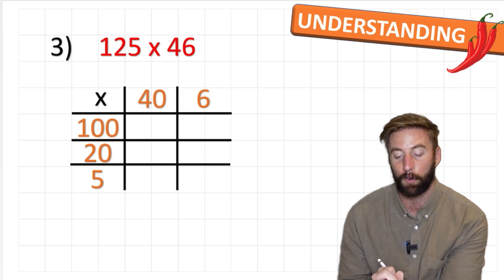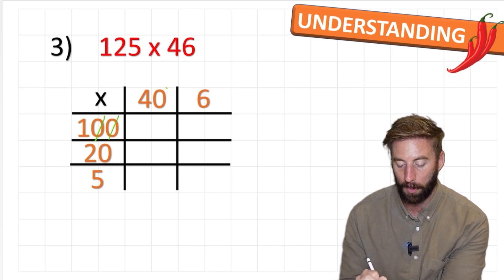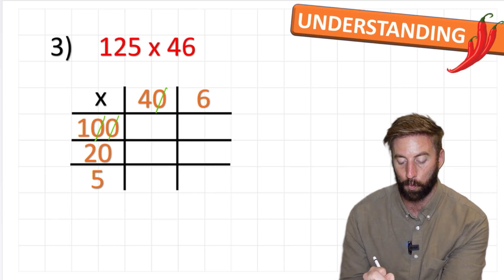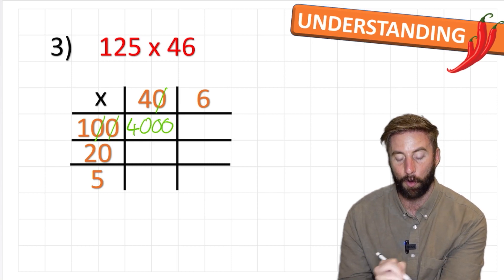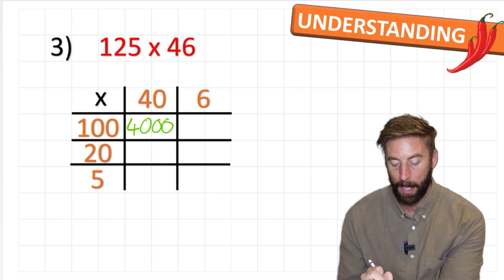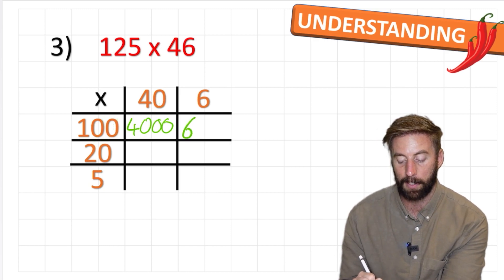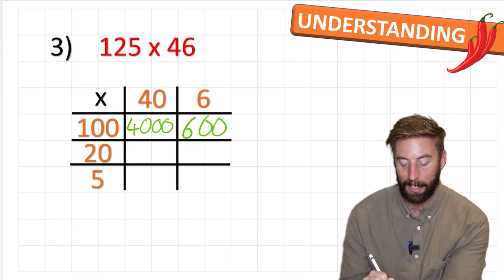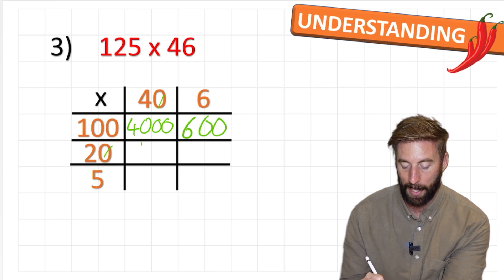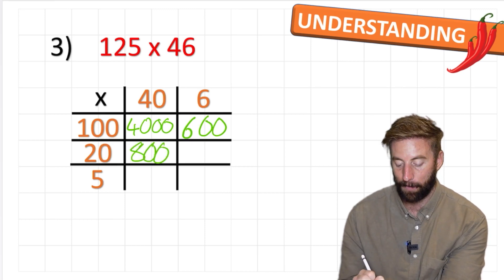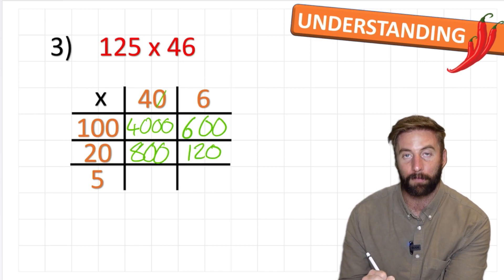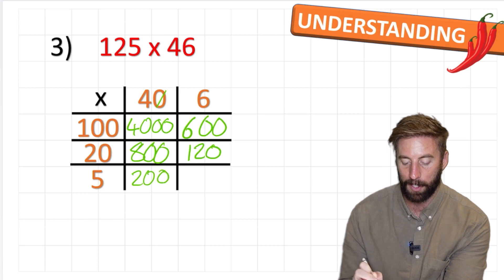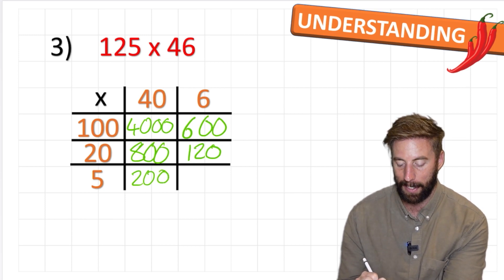My first question is 100 times 40. I can see I have three zeros that I'm going to ignore for a moment and just do 1 times 4 which is 4. Now I have to put my three zeros back in. So 40 times 100 is 4,000. Now 100 times 6 is 600. 20 times 40 is 800. Then I have 20 times 6, which is 120. 5 times 40 is 200. And last but not least, 5 times 6 is 30.